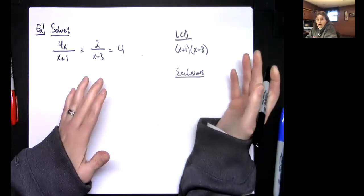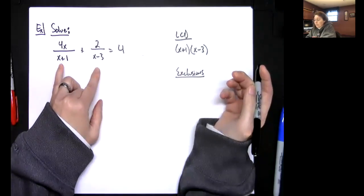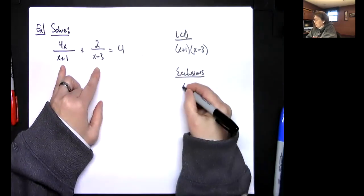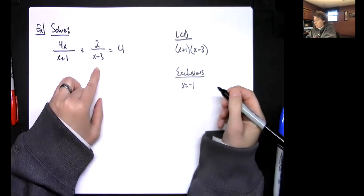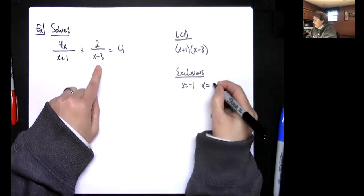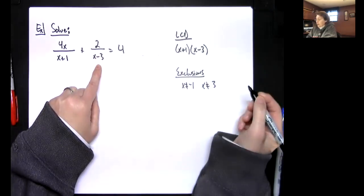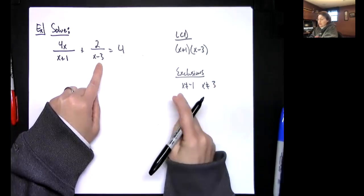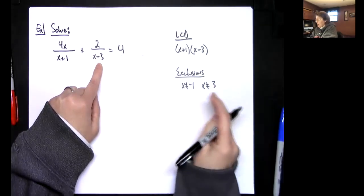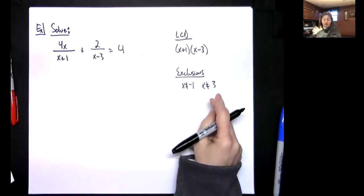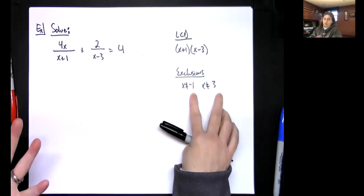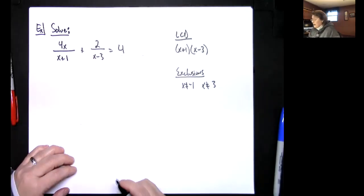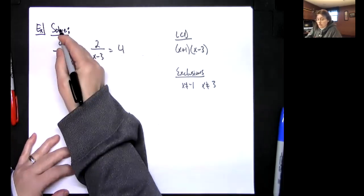Exclusions — basically, what can x not be? Well, x cannot be negative one, because that would make that denominator zero. X cannot be three, because three minus three is zero. So x cannot be negative one and x cannot be three. If I get those as answers, I know I have to throw them out. If I get both of them, it would be no solution.